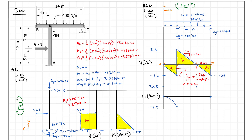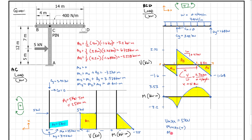We connect the dots with a parabola, shading in both the negative and positive moment regions. The maximum shear Vmax occurs at the 5 kilonewton point on member AC, so Vmax = 5 kilonewtons. The maximum positive moment Mmax is 3.53 kilonewton-meters, and the maximum negative moment Mmax is minus 3.2 kilonewton-meters.